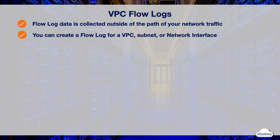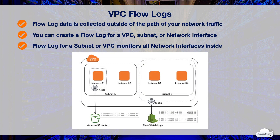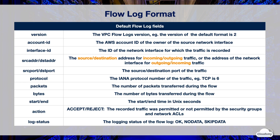If you create a flow log for a subnet or VPC, all network interfaces in that subnet or VPC are monitored. For example, you can create a flow log that captures traffic for the network interface for instance A1 and publishes the flow log records to an S3 bucket, while there are no flow logs that capture traffic for instance A2's network interface. You can create a second flow log that captures all traffic for subnet B and publishes the records to CloudWatch Logs, capturing traffic for all network interfaces for all instances in subnet B. If you launch more instances into your subnet after creating a flow log, a new log stream for CloudWatch Logs or log file object in Amazon S3 is created for each new network interface.